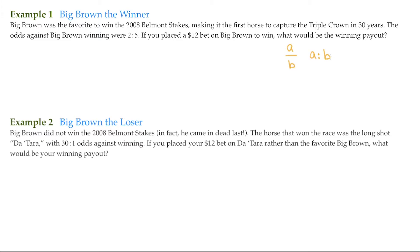For this first example, it says: Big Brown was the favorite to win the 2008 Belmont Stakes, making it the first horse to capture the Triple Crown in 30 years. The odds against Big Brown winning were 2 to 5. If you place a $12 bet on Big Brown to win, what would be the winning payout? We're going to write the odds here as a fraction, 2 to 5.